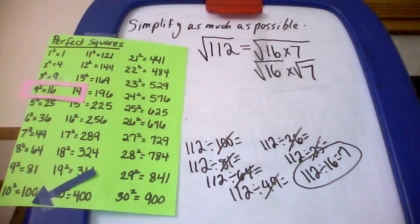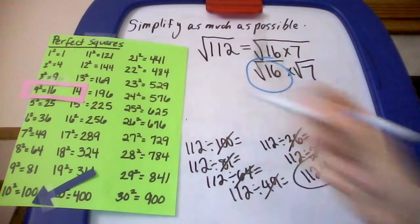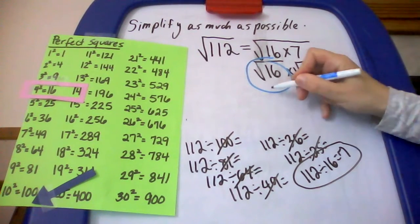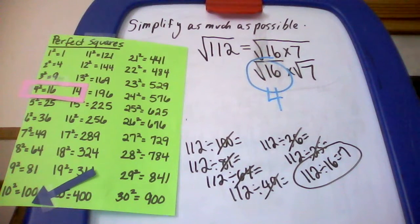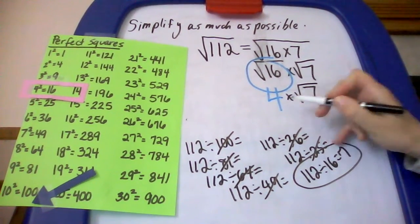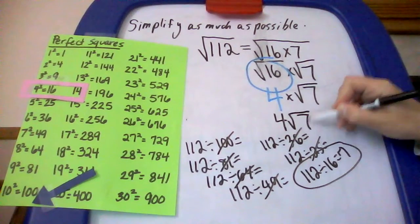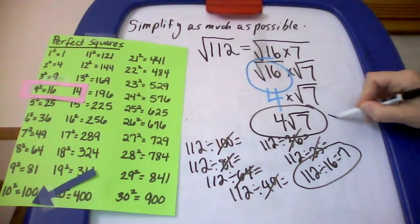From here, I'm going to evaluate the square root of 16. I know the square root of 16 is 4, because 4 times 4 is 16, so I'm going to rewrite this as 4, and I'm going to bring down my square root of 7. And then my last step, I'm just going to remove this multiplication symbol, so my answer is 4 times the square root of 7. And here is my final answer for this one.